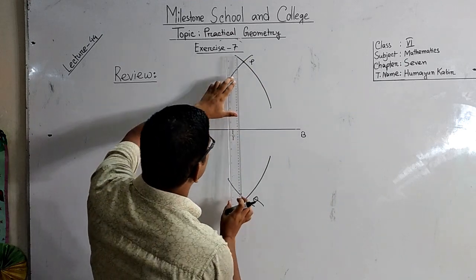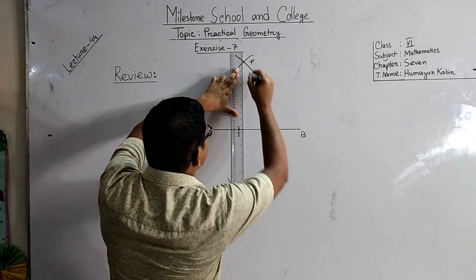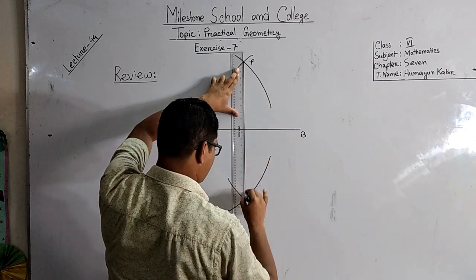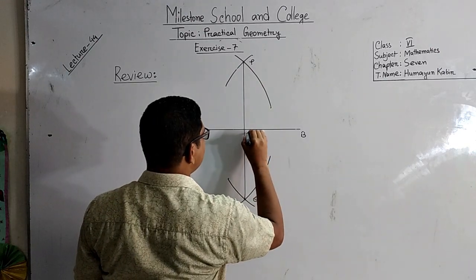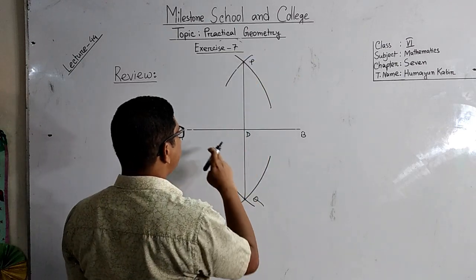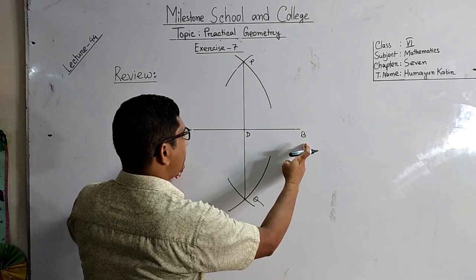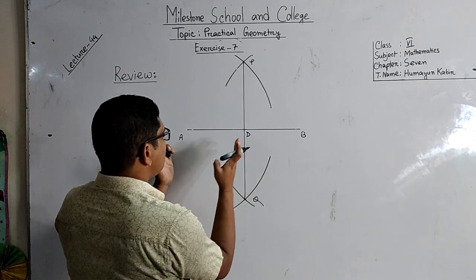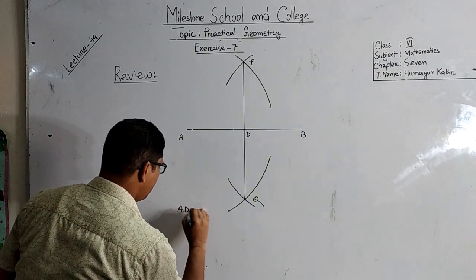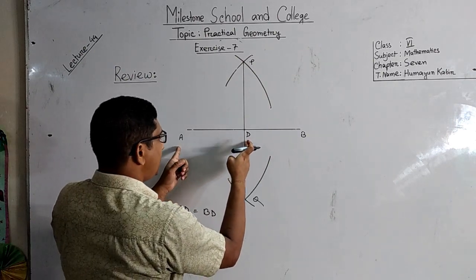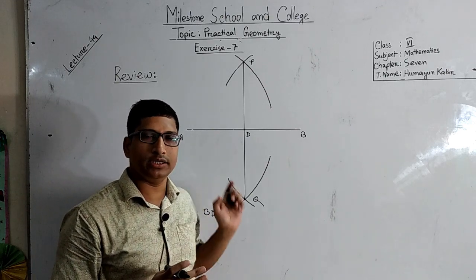We will join PQ. Now look at here - this PQ line segment intersects AB at a point. Suppose this point is D. The AB line segment is divided into two equal parts, AD and BD. AD is equal to BD. These two parts are equal. I think it is very clear to you.